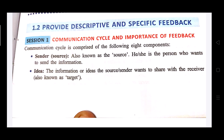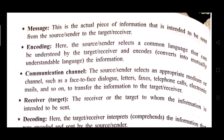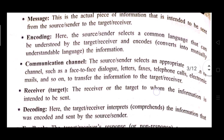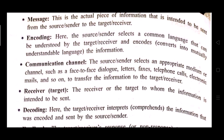The third component is message. Message is the actual piece of information that is intended to be sent from the source to the target, or from sender to receiver. The fourth element is encoding, which means the source or sender selects a common language that can be understood by the target — a language easily understood by both sender and receiver — and encodes, meaning converts it into a mutually understandable language.